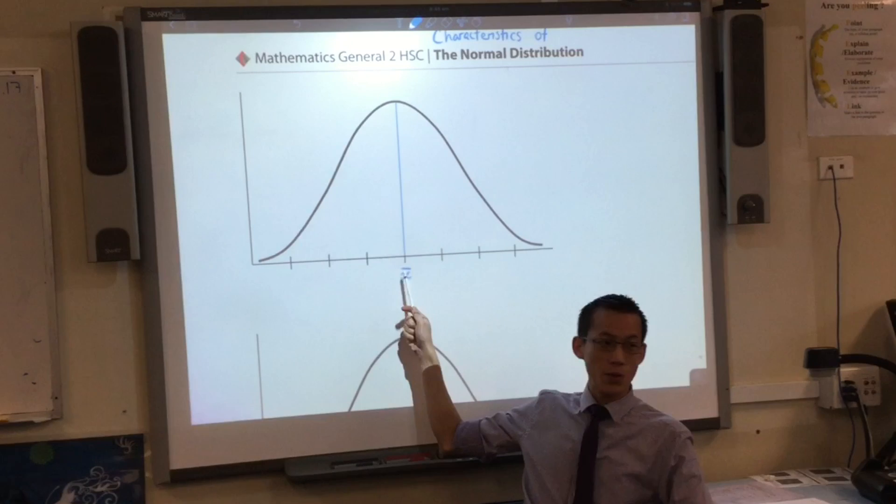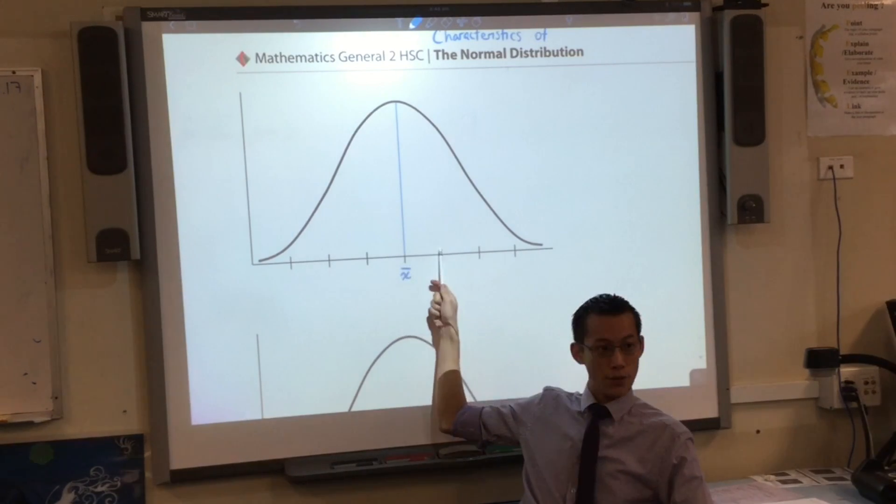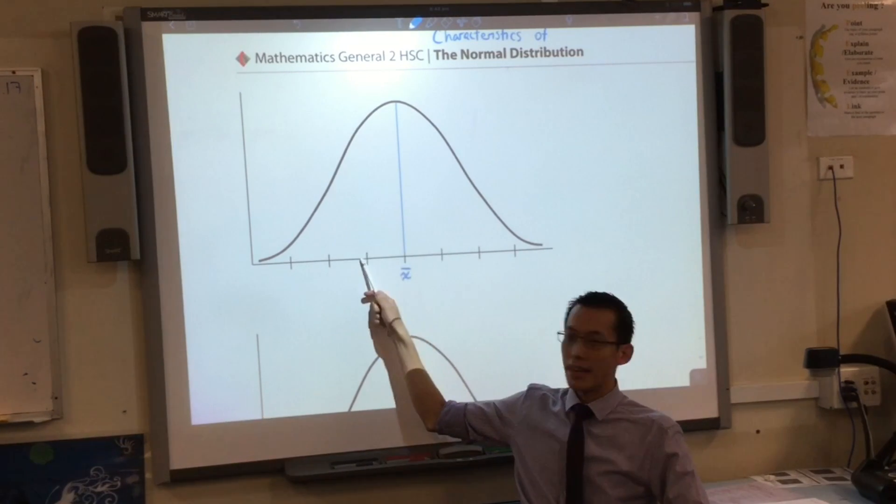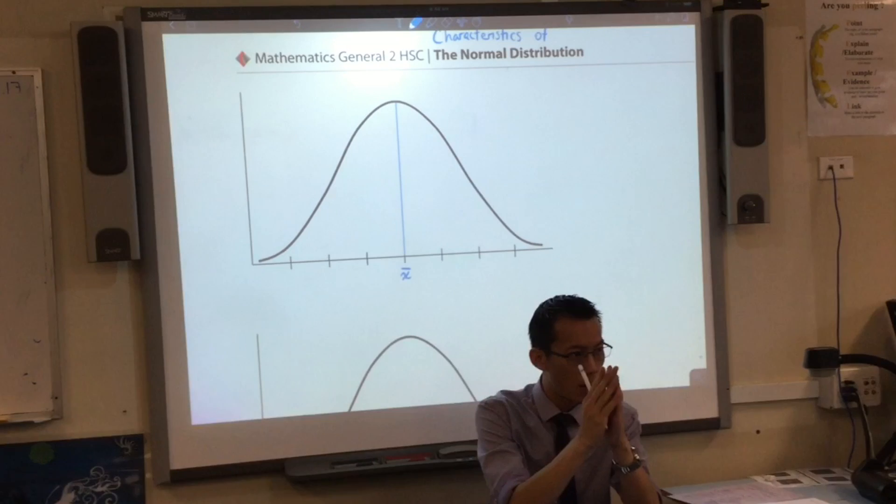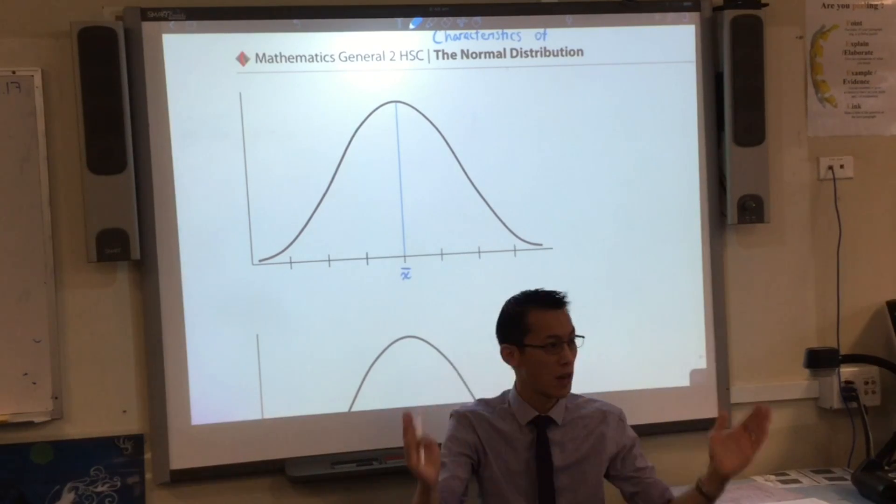So if the standard deviation on your set of scores was like five across a test out of a hundred percent, then if this is 50% then this would be 55 and this would be 45. Does that make sense? So we've gone one standard deviation either way.